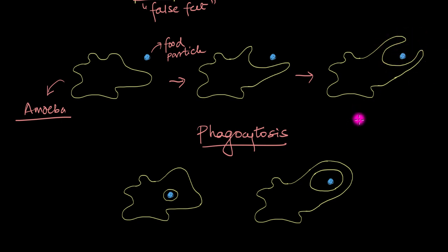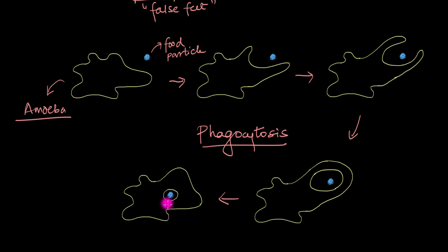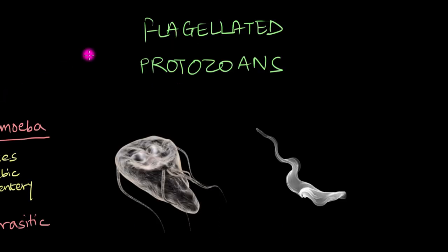It will continue to do so, and once the food particle is surrounded, it will draw it inside, engulfing the whole thing. Once the food particle is inside the amoeba, it will secrete different enzymes to digest the food that it just engulfed as a whole. And this is essentially how amoeboid protozoans capture food with the help of pseudopodia.